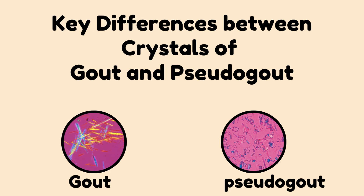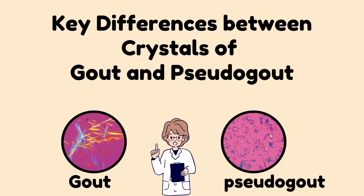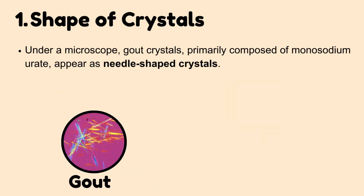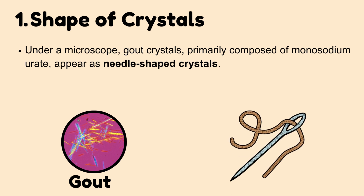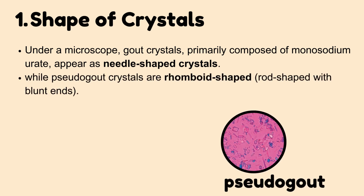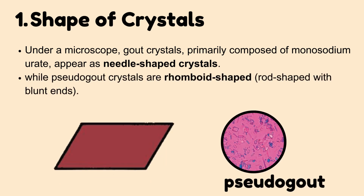Key differences between crystals of gout and pseudogout. Let's break down the differences. Shape of crystals: under a microscope, gout crystals, primarily composed of monosodium urate, appear as needle-shaped crystals, while pseudogout crystals are rhomboid-shaped — they resemble rods with blunt ends.